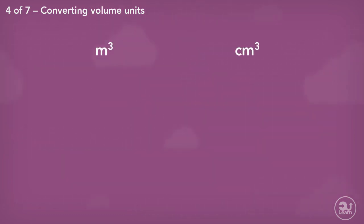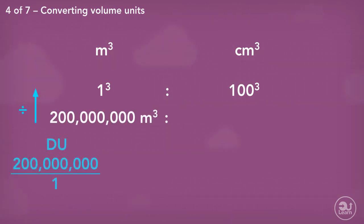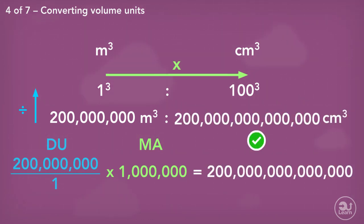The ratio for meters cubed to centimeters cubed is 1³ to 100³. 200 million meters cubed divided by 1 multiplied by 100³ equals to 200 trillion centimeters cubed.